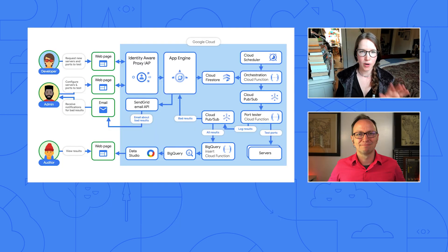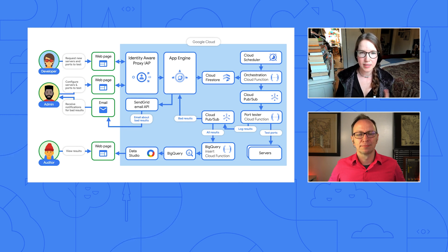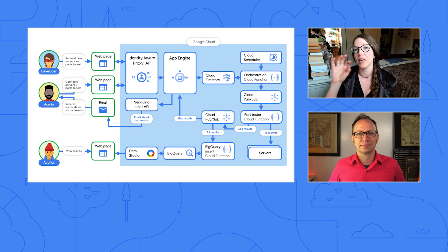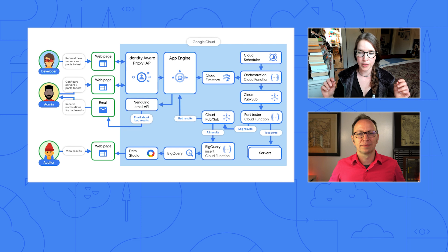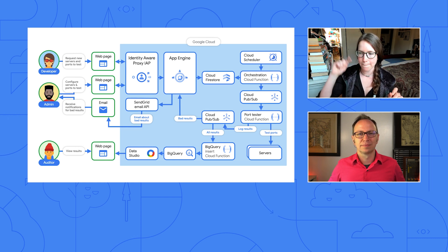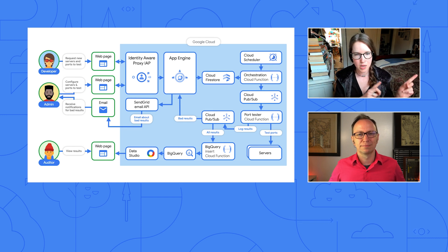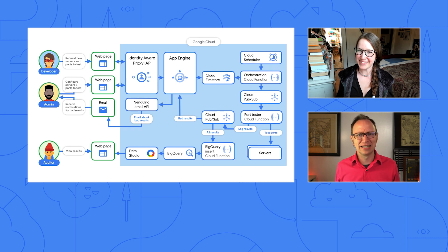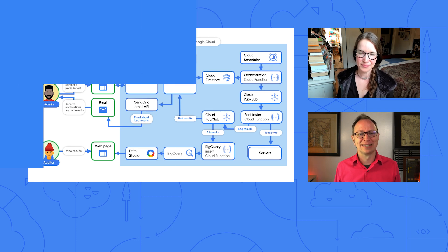Let me just walk through it real quick. For our web app, we're going to have App Engine with Identity-Aware Proxy to control our permissions, and we're going to store all the requests in Firestore. Every night for our audit, Cloud Scheduler kicks off a pipeline of PubSub and Cloud Functions that scans all our ports. We write all the results to PubSub. A filtered subscription sends the bad results back to App Engine to trigger an email to our admin. And all the results go into BigQuery, which we show in Data Studio reports. I really like it — this would actually be a fun application to build.